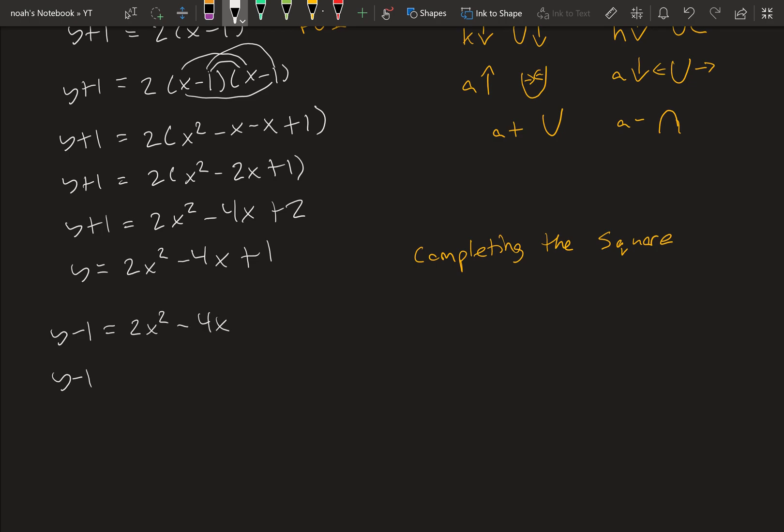Next, you want to take out a constant. You want to factor out a coefficient from the x squared term. Here it is 2. So y minus 1 equals 2 times x squared minus 2x.